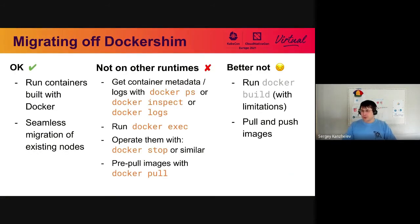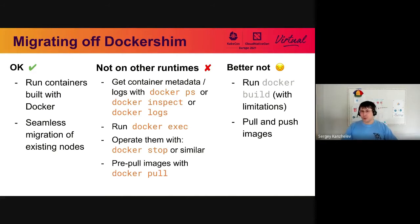We recommend migrating off Docker Shim now before 1.24 comes. You already can do that because containerd and CRI-O are production quality, well supported, and you can use them at any moment now. Generally, you wouldn't be losing anything because your containers will run the same way. You will only get problems if you intentionally or unintentionally took a dependency on Docker — for example, calling Docker PS from your support scripts, or executing code into containers with Docker exec.